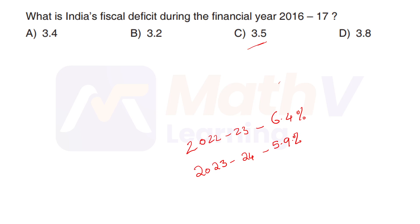some terms: revenue deficit, primary deficit. In this class, I will finish the syllabus topic. I am going to study some basic concepts. This answer is 3.5. We will add the latest data: for 2023-24, the fiscal deficit is 5.9; for 2022-23, it is 6.4.